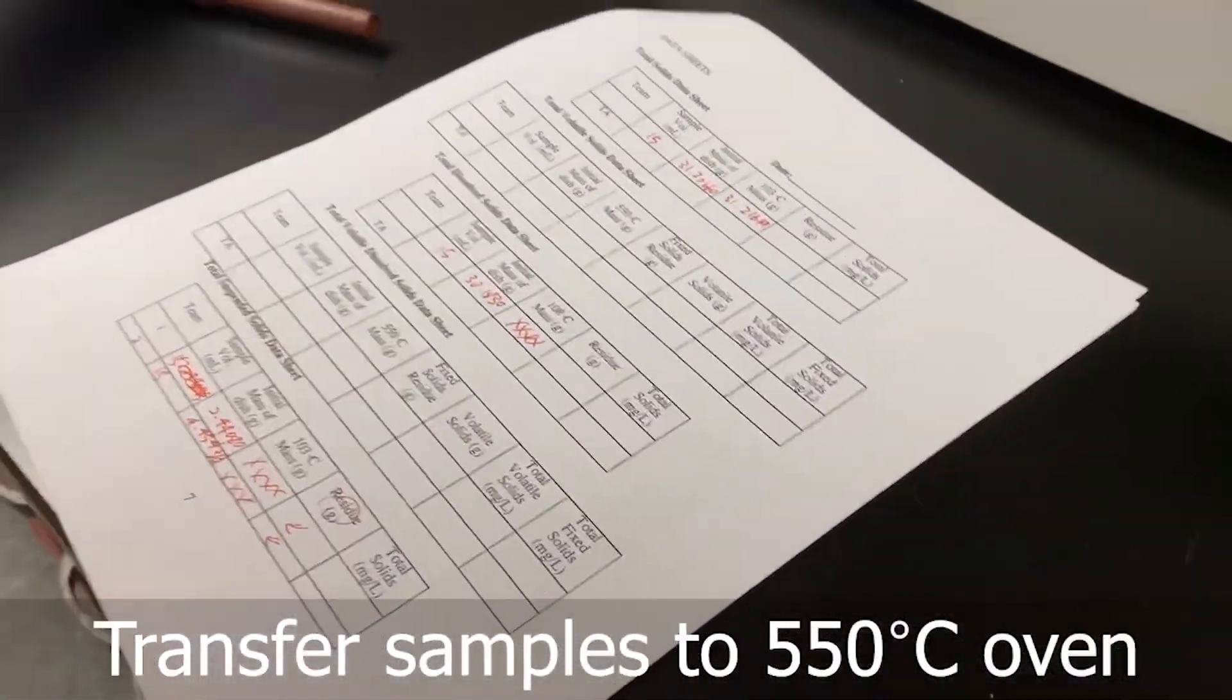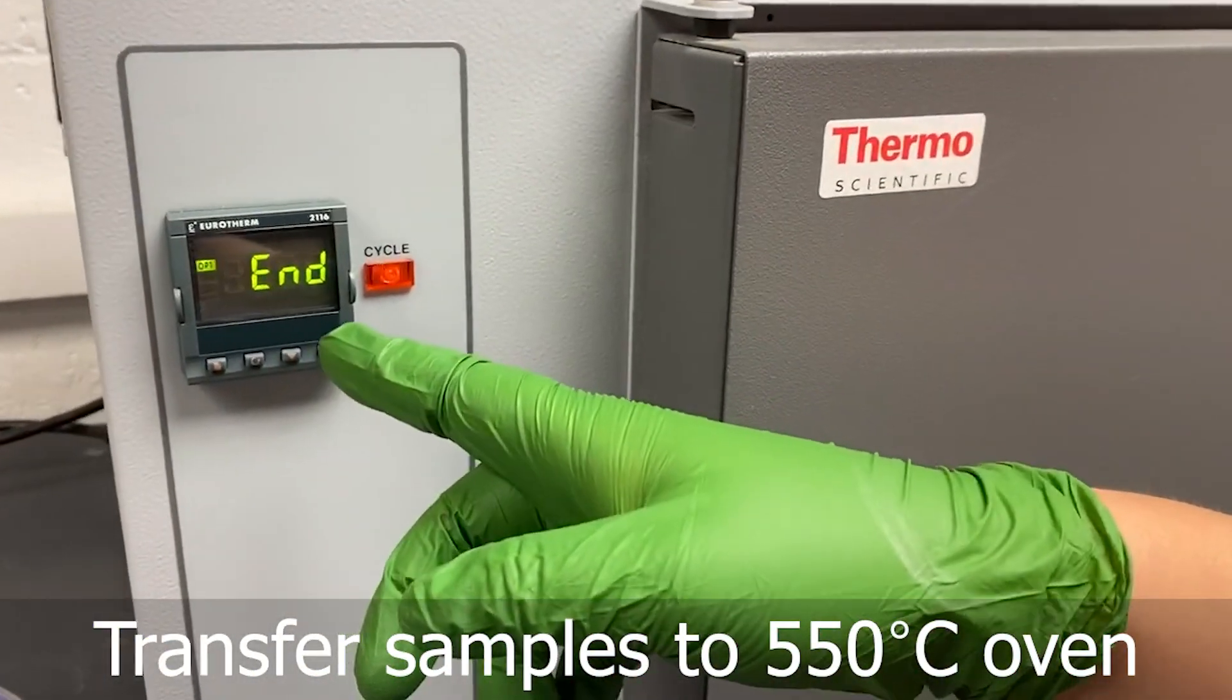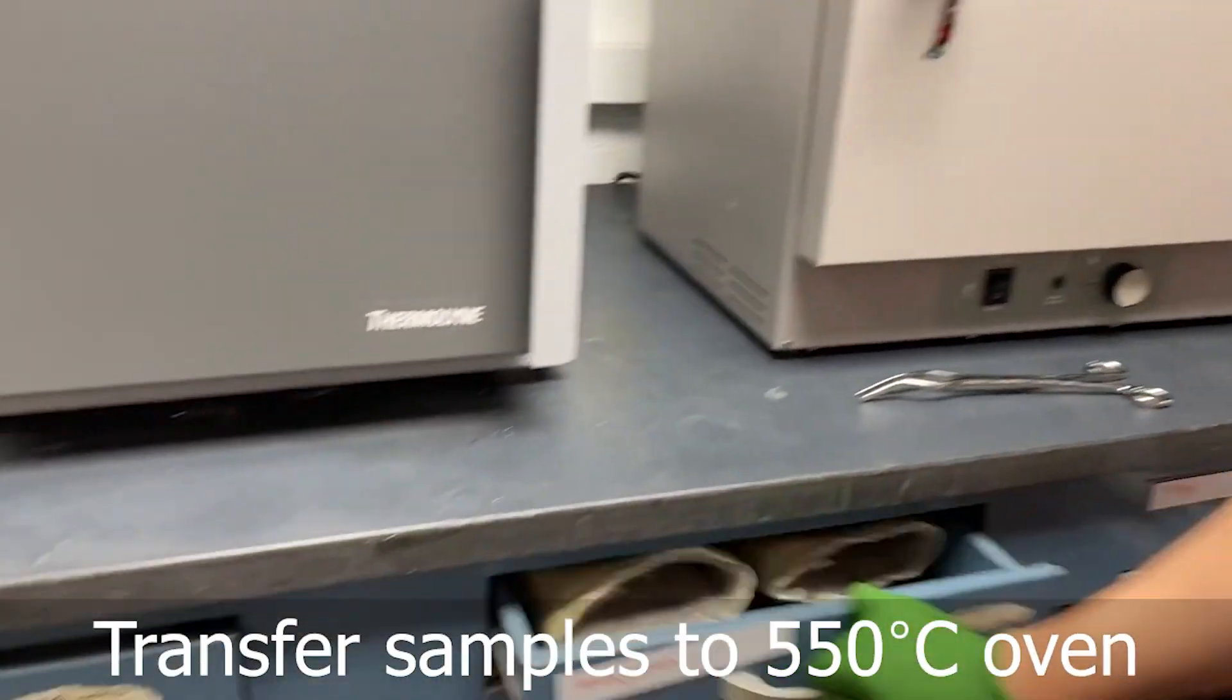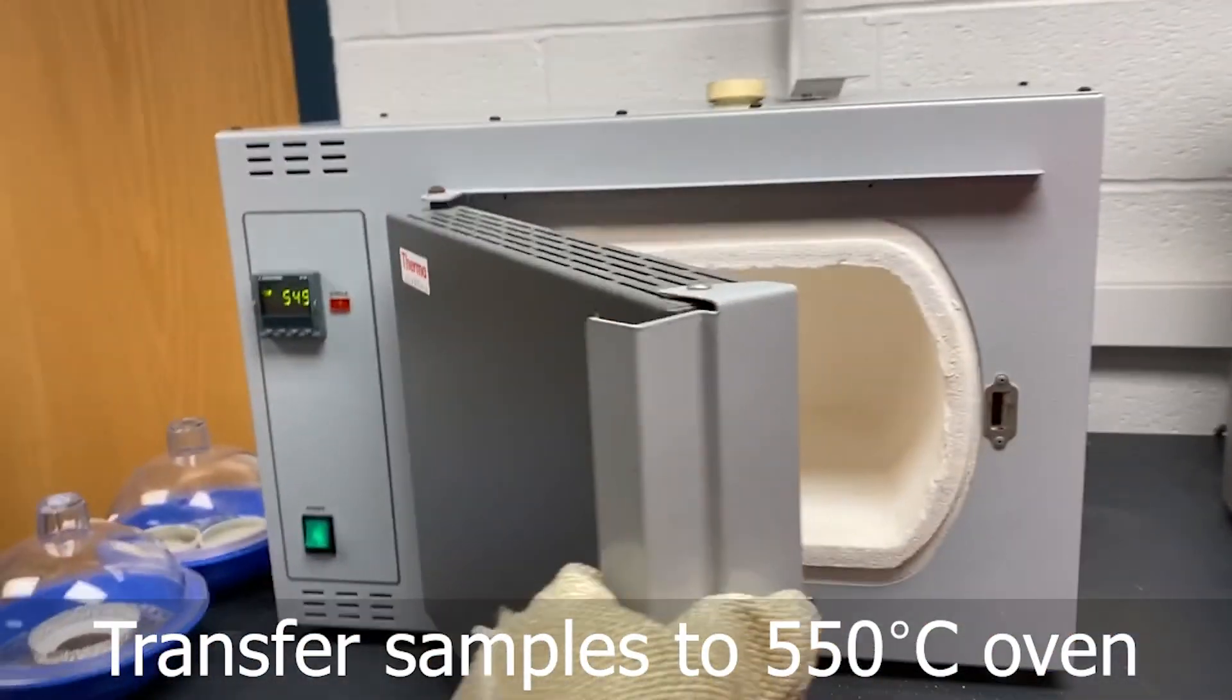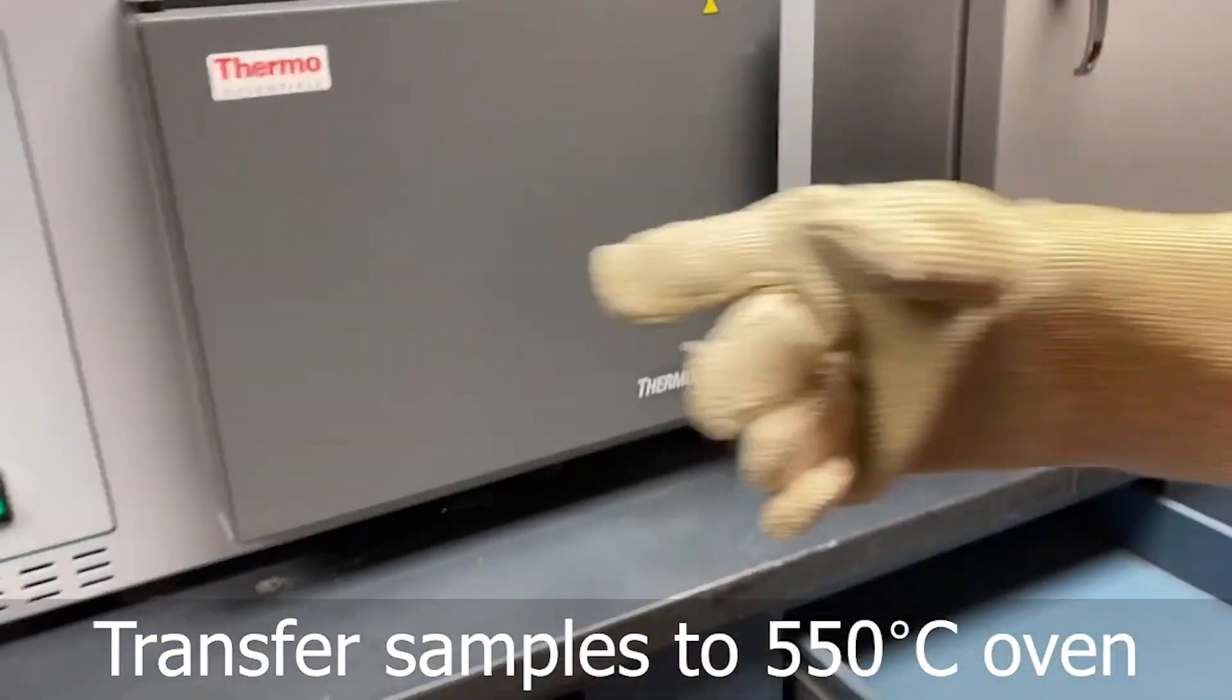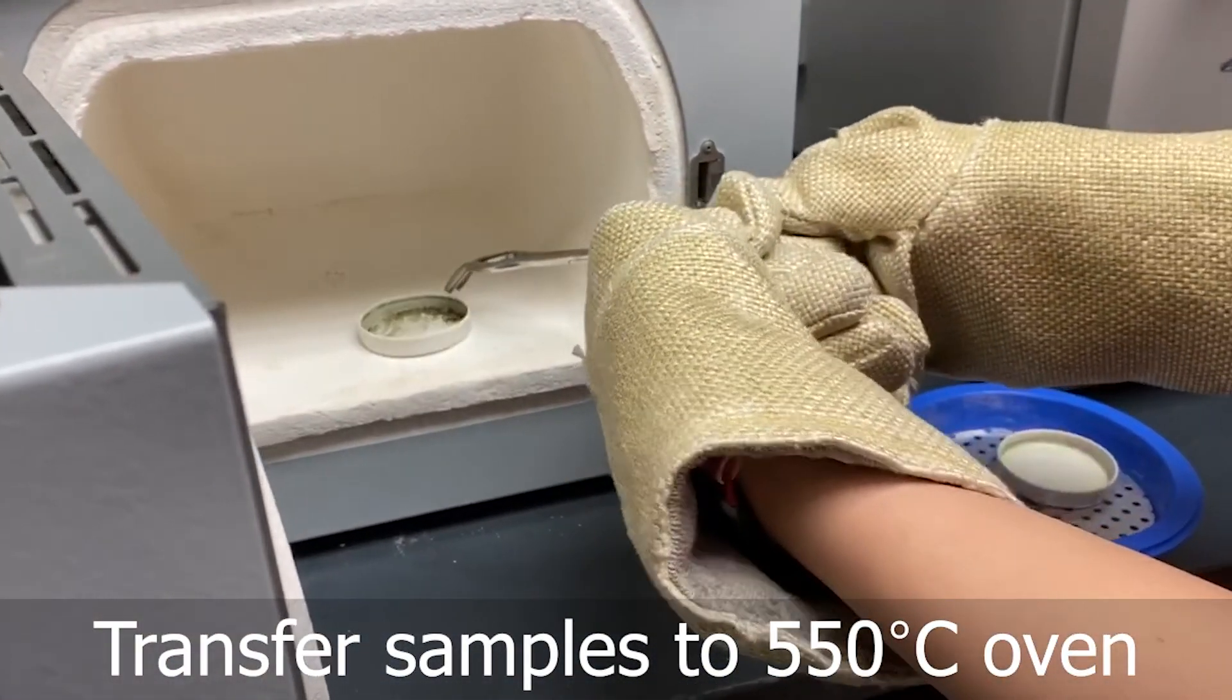After measuring the mass, we are going to put them into 550 degree oven. So this is 550 degrees oven and it is very hot inside. When we are using this, we need to wear this glove. So we are going to put all of these samples into the oven.